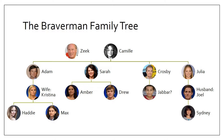The show revolves around three generations of the Braverman family: Zeke and Camille, who are the patriarch and matriarch, their four children — Adam, Sarah, Crosby, and Julia — each with their own families over various stages and ages, and each unique in the way they have chosen to parent. This show depicts the realistic life within the family unit and shows a variety of key communication theories.